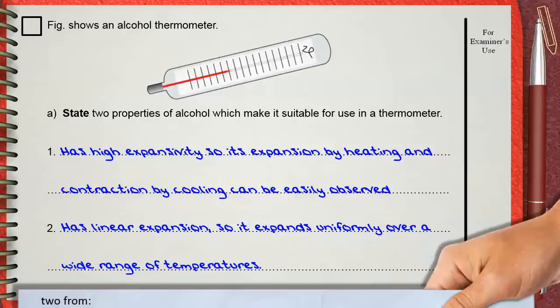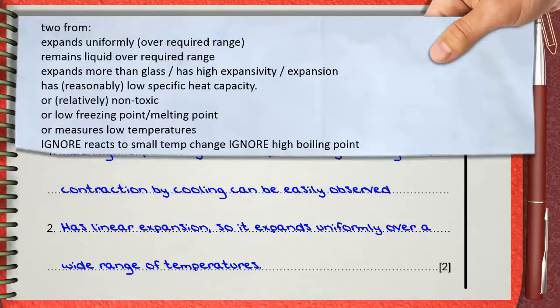Let's see what the mark scheme adds. You can say expands uniformly over required range—this is what we call linear expansion. You can say remains liquid over the required range, or expands more than glass, has high expansivity or expansion.